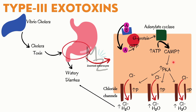For type 3, the example is cholera toxin, released by Vibrio cholerae. The cholera toxin produces its effects on the gastrointestinal system. It is taken up via the AB toxin mode, damages intestinal cells, and leads to massive watery diarrhea described as rice water-like stools.